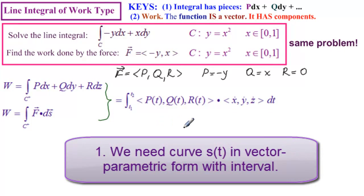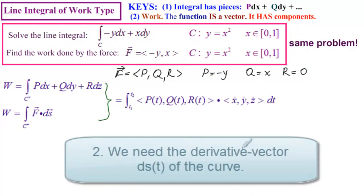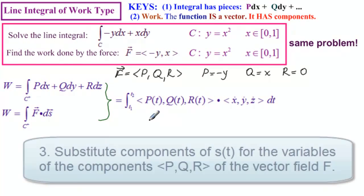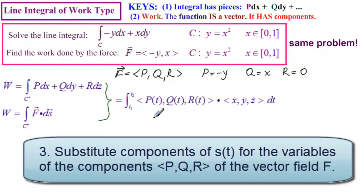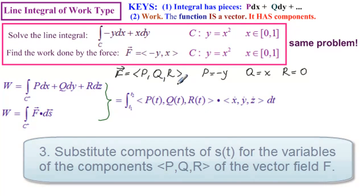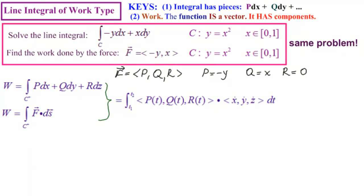So what do we need to find? As before, we need to put the curve in vector parametric form with an interval. And this time it's very important we make sure that the curve goes the same way that it's given in the beginning. Then we need to find the vector derivative here, but not its magnitude. We're going to leave it in vector form. Then we need to substitute the components of x, y, and z from the vector parametric form of the curve into these functions.